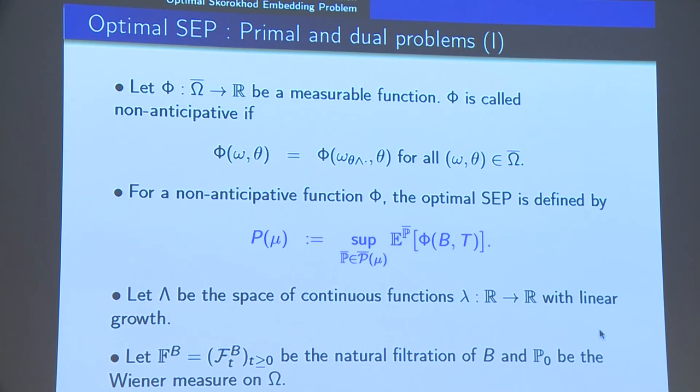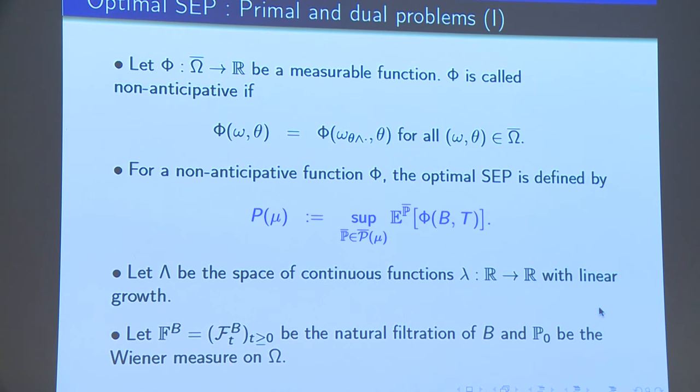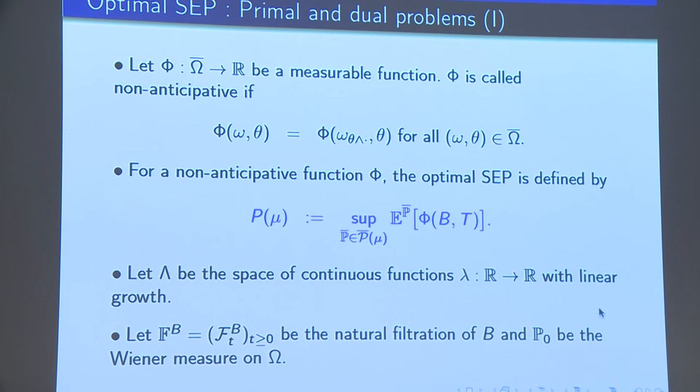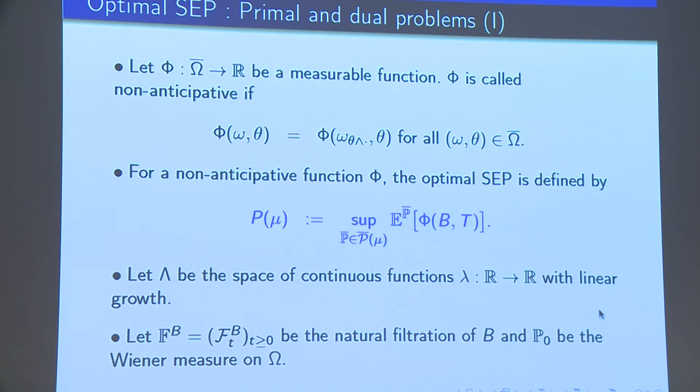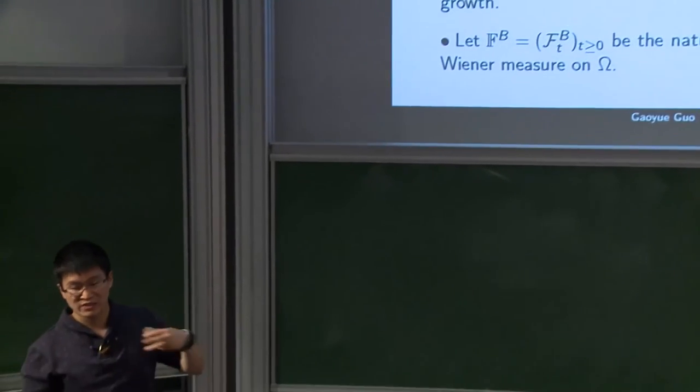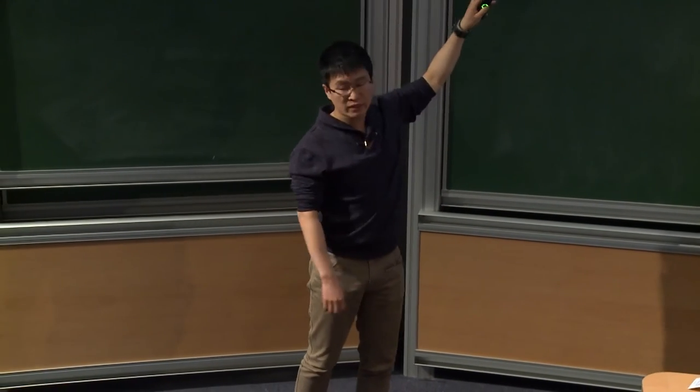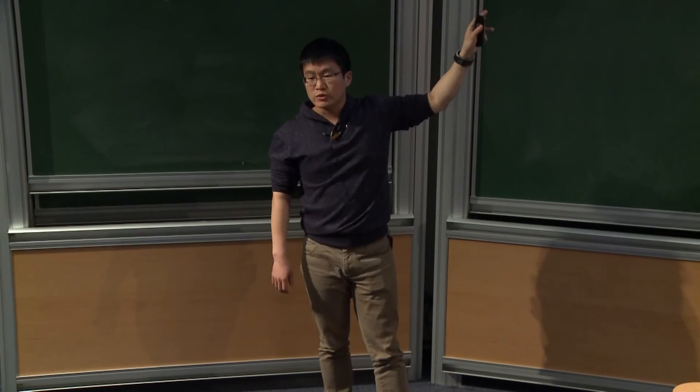As for the optimization problem, we consider this problem for a restricted class of functions, which are called non-anticipative. That means this function node depends the path up to theta. So, for such a non-anticipative function phi, the optimal Skorokhod embedding problem is defined as the maximum of this expectation over all probability measures P bar in the set P bar of mu. This is the primal problem. So, we wonder why this optimizer exists, and how to characterize this optimizer. So, to do this, we first introduce a dual formulation, and then establish the required duality.